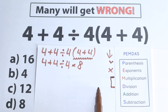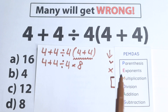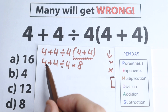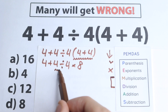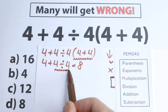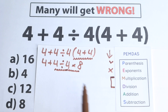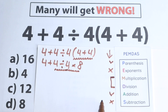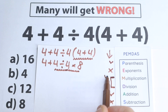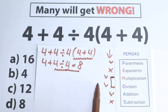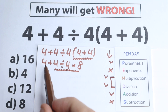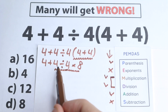We look at the expression from the perspective of the multiplication and division group. We have a division sign and a multiplication sign. We are interested in these — not in addition yet. Addition comes after multiplication and division. So in the last step, we will add 4 to the expression.